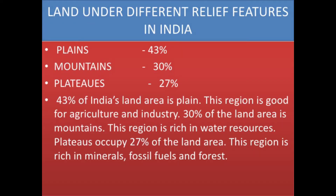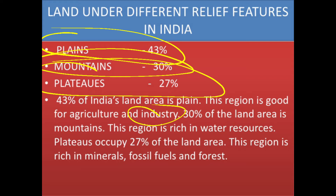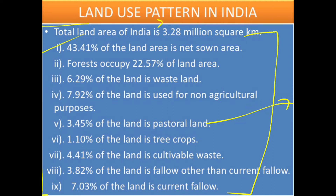Land under different relief features in India: 43% of the land is covered by plains, 30% by mountains, and 27% by plateaus. The plains are very good for agriculture as well as industry. The mountains are a good source of resources such as wood. The plateaus are good for minerals, fossil fuels, and forests. India has a total area of 3.28 million square kilometers — please take a screenshot as this is very important.